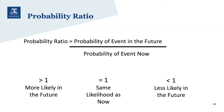Once we've established which models do a reasonable job, we calculate key variables. One key metric is the probability ratio — the probability of an event occurring in the future divided by the probability of it occurring now. A value of one means the likelihood is about the same, while a value greater than one means the event is more likely in the future.